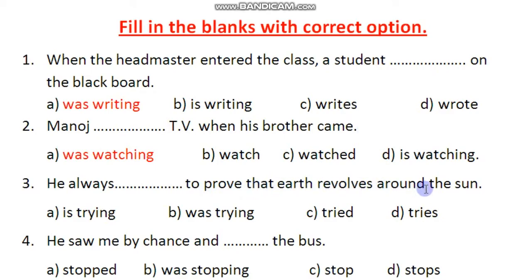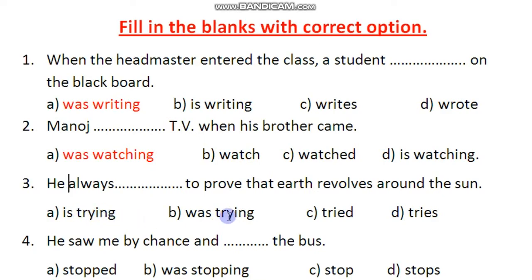Next: He always dash to prove that earth revolves around the sun. With 'always,' this is our adverb of time, and when an adverb of frequency like 'always' is given, we use present indefinite tense. So from the options — trying, was trying, tried, or tries — 'tries' is the right option.